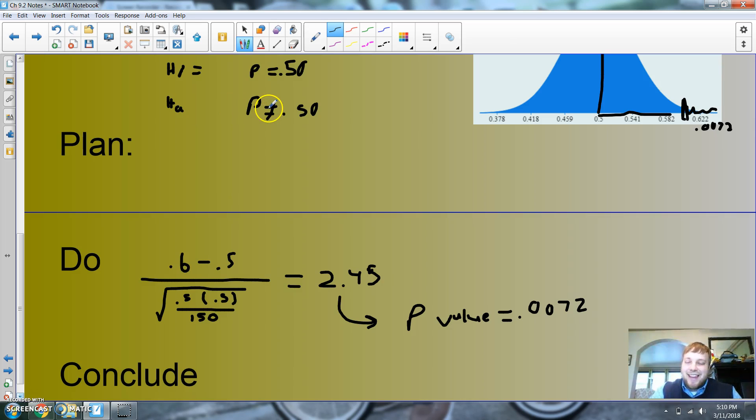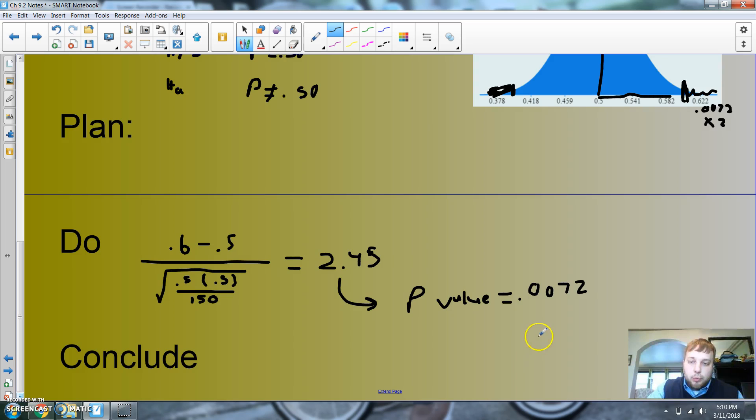Now the problem with this is that this is not just one-sided. It says it's not equal to, so that means I could have gotten high or I could have gotten low. So on both those, we have to go on both sides. So it's basically this times 2. And if you put in your calculator, your calculator will pump out like 0.0144 as the p-value. It's still low, so the null will go. Conclusion: I'm gonna reject.